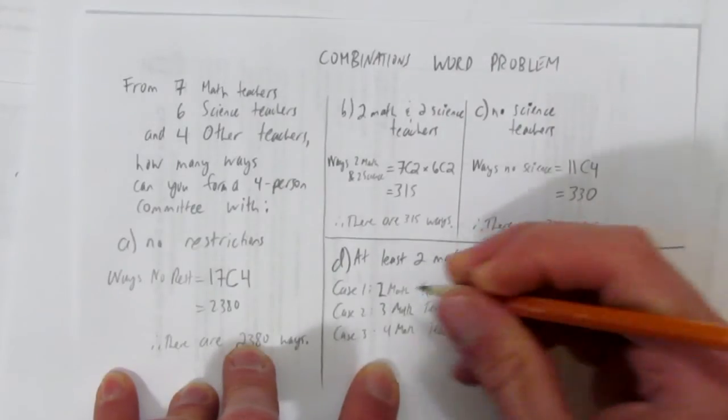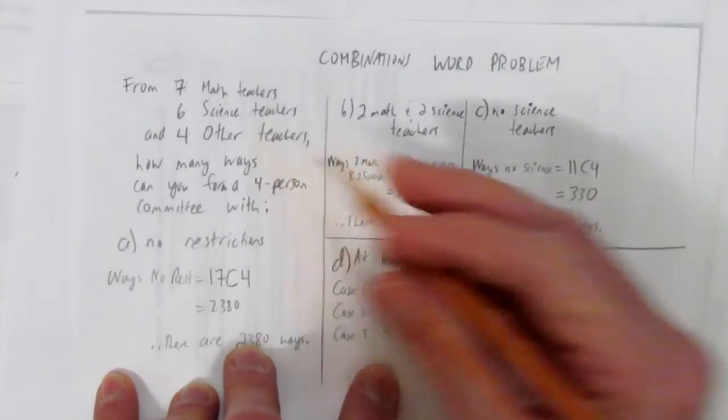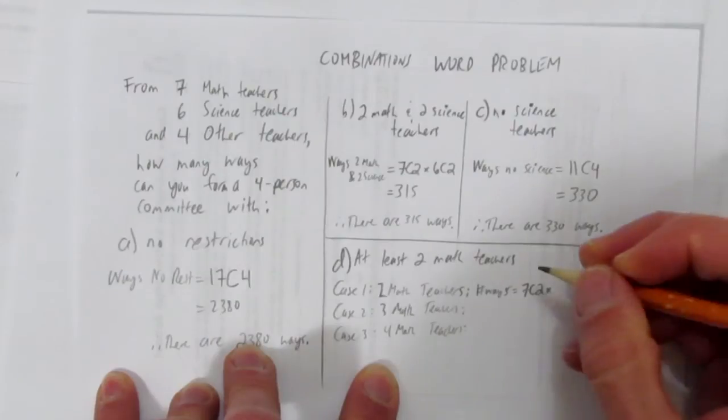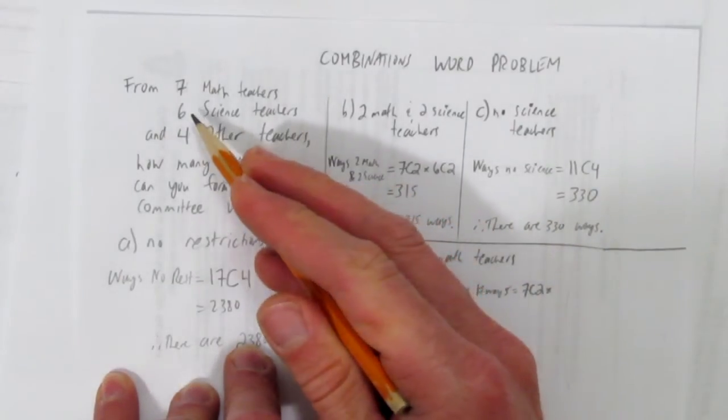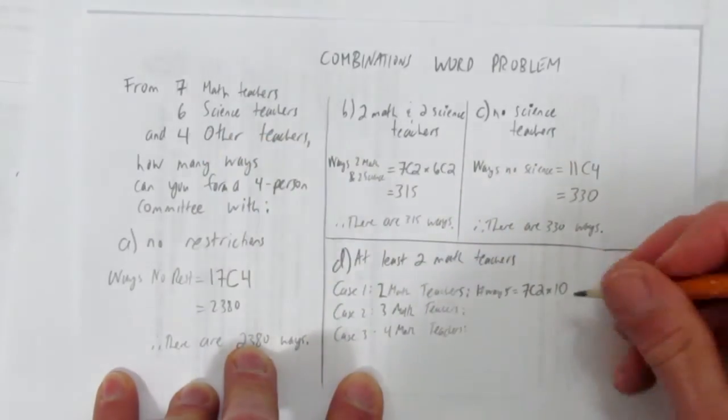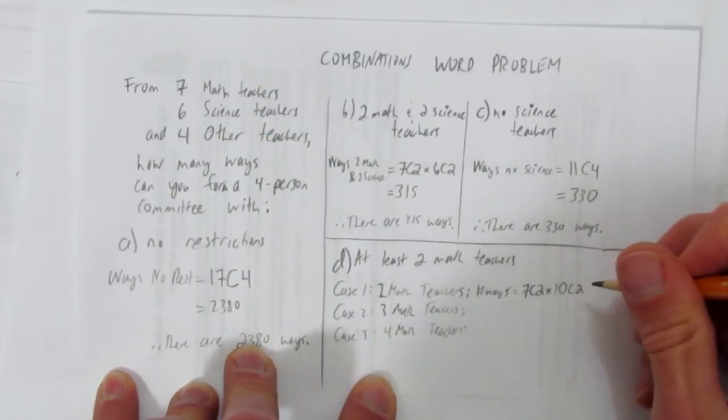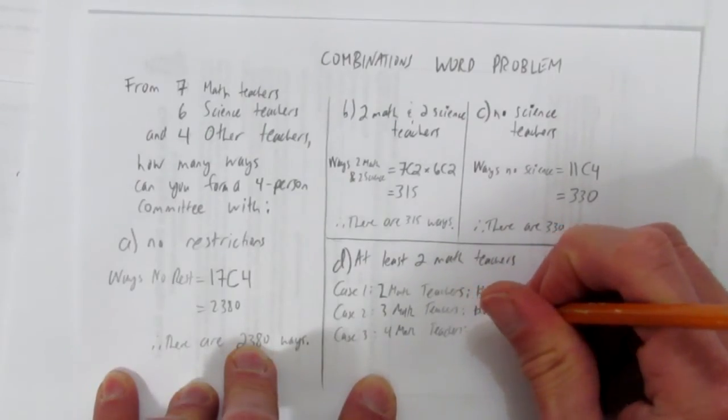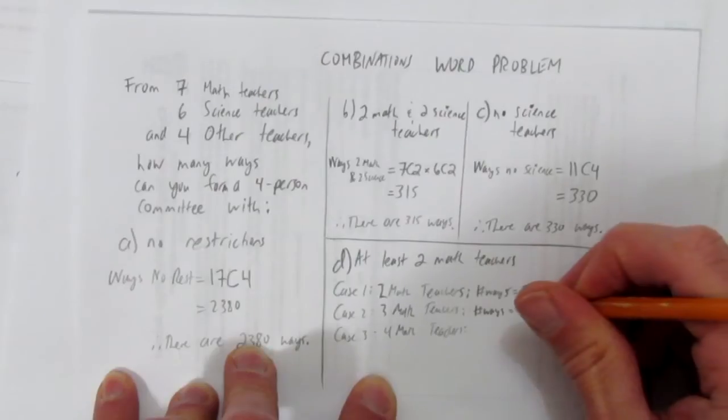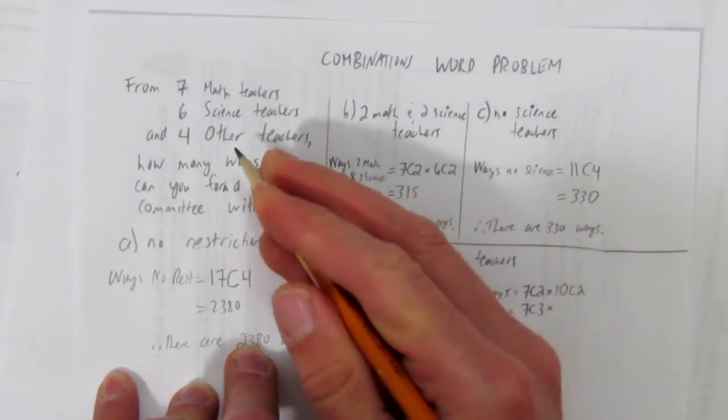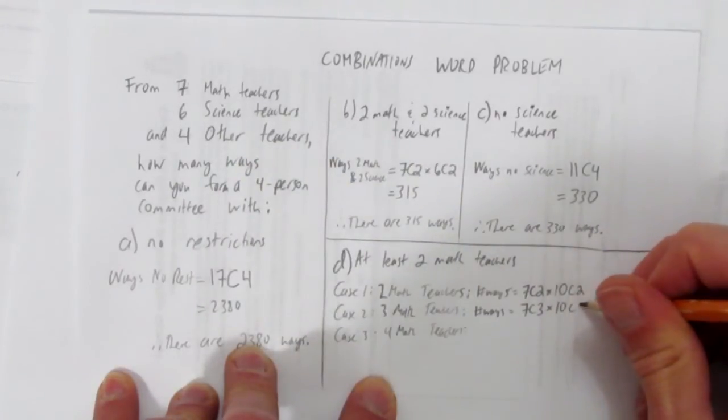Number of ways to choose two math teachers? I have seven math teachers, choose two of them. And then times by, for every one of those choices, I have a bunch of other choices I can make. I pick from the other ten teachers. That's just the science and other teachers. Choose two of them. The number of ways I can choose three math teachers would be, take the seven math teachers, choose three of them, and multiply by, from the other ten teachers, choose one of them.